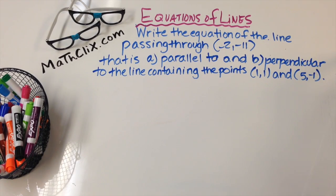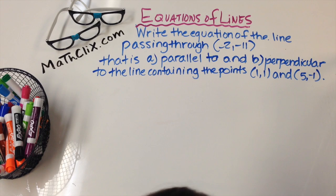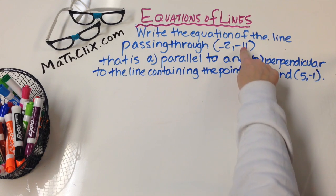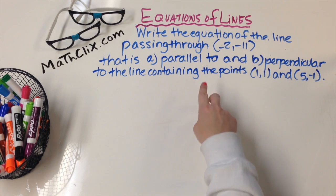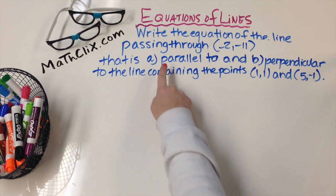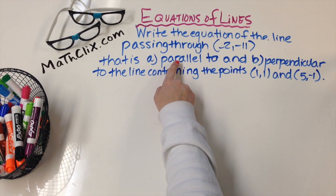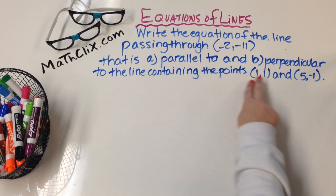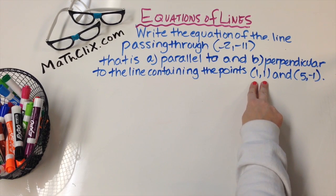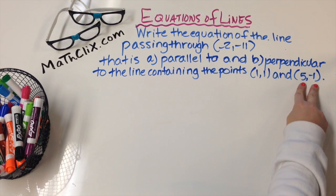Writing equations of lines. In particular, let's write the equation of the line that passes through the point negative 2, negative 11, and that is parallel to the line that contains the points 1, 1 and 5, negative 1.